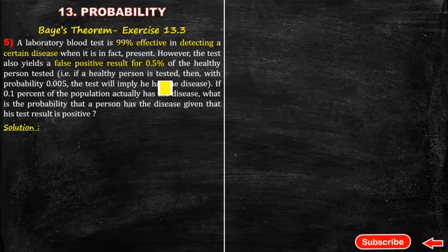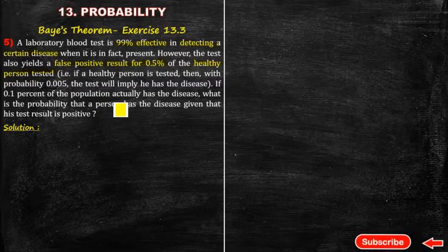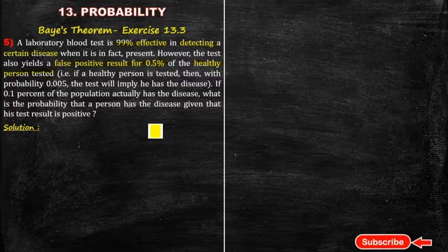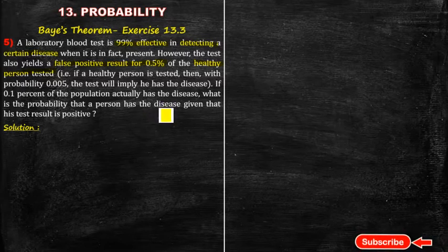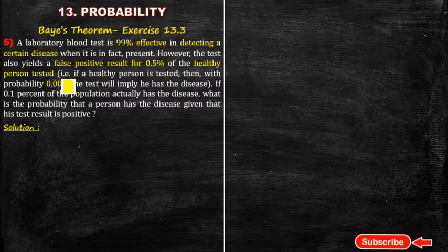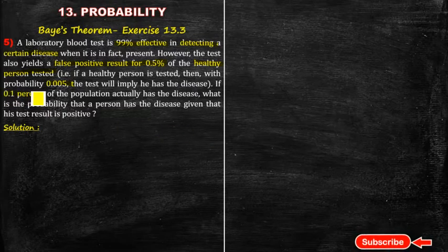The meaning of a healthy person: the result should show a false positive result of 0.5% of the healthy persons tested. If there is a disease-affected person, 99% of the disease is exactly detected. But if a healthy person is tested, the probability of a false positive is 0.5%. If 0.1% of the population is affected, then the disease is spread.